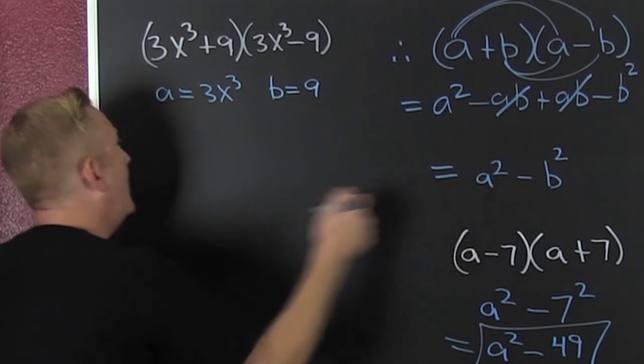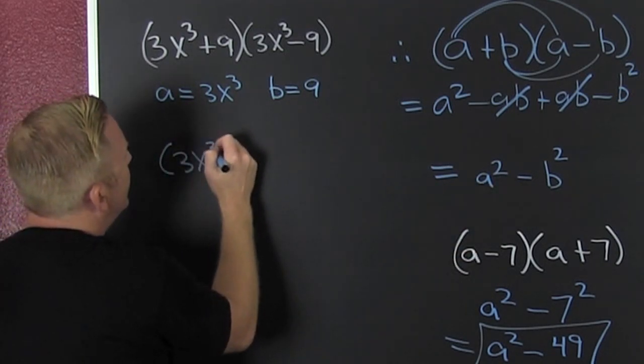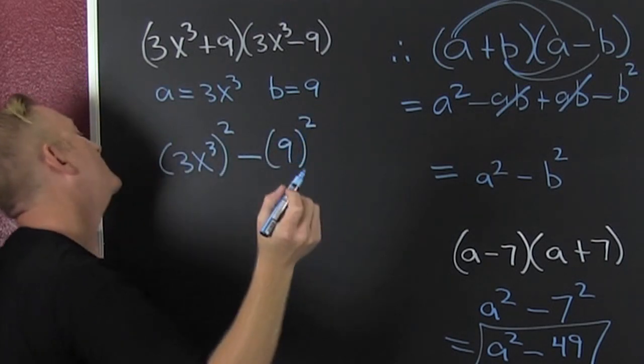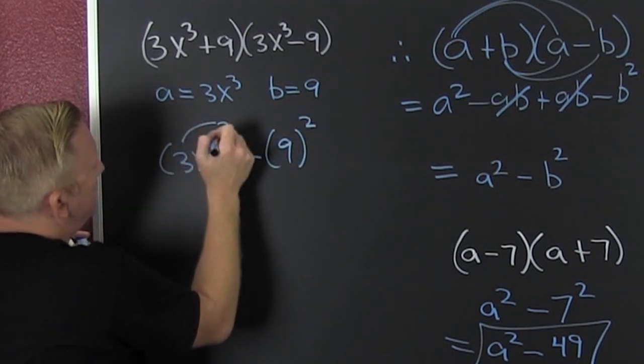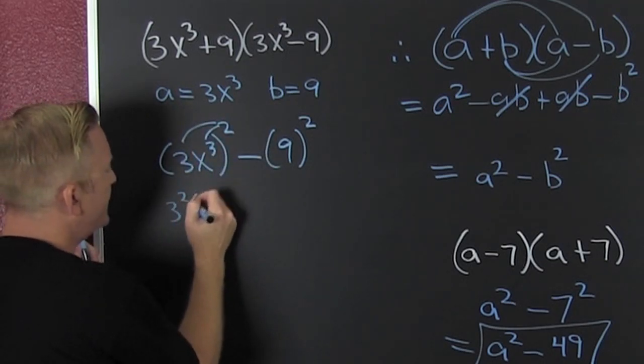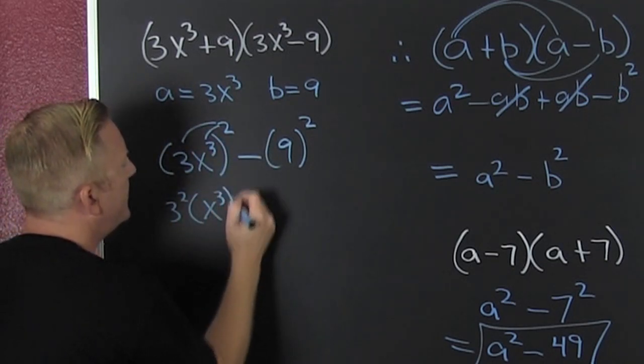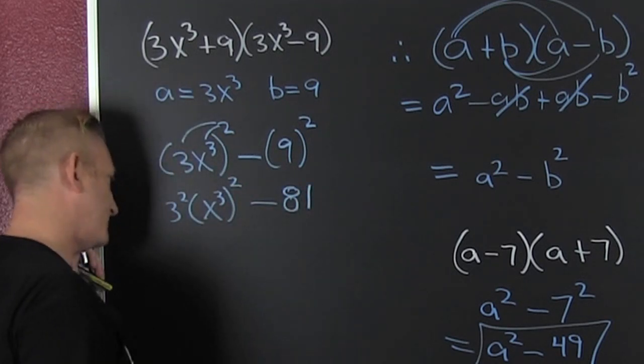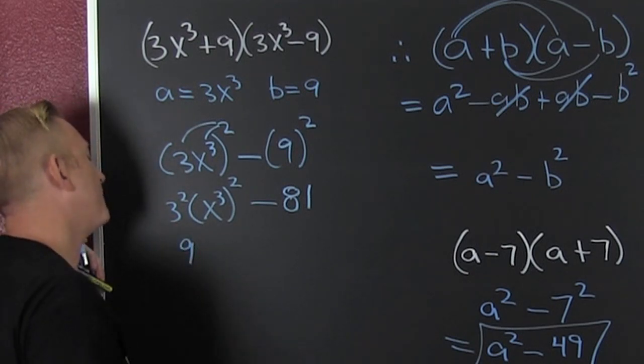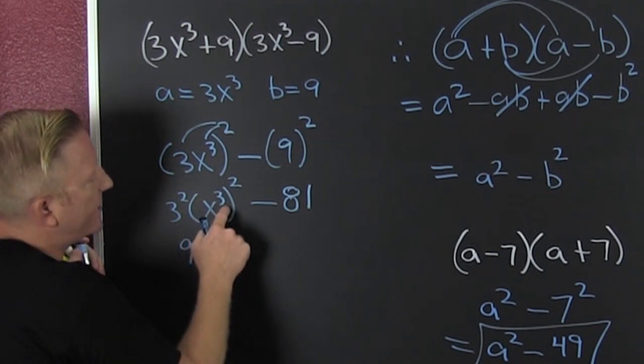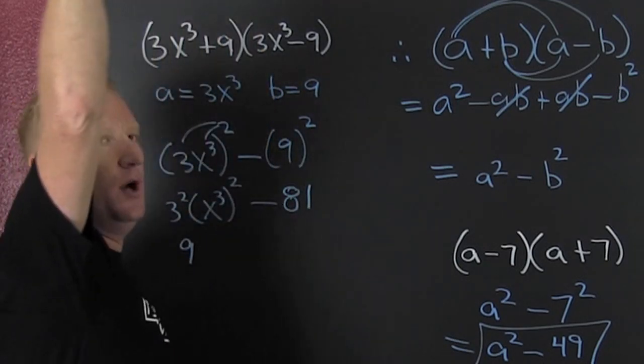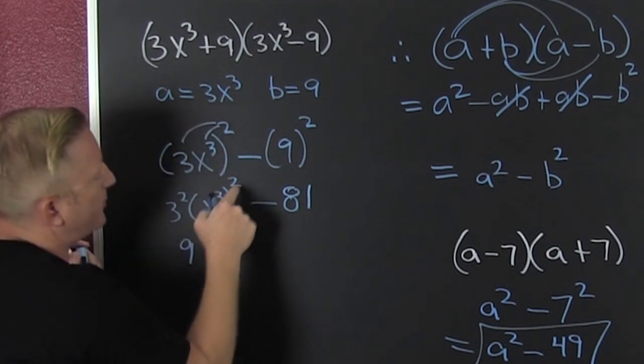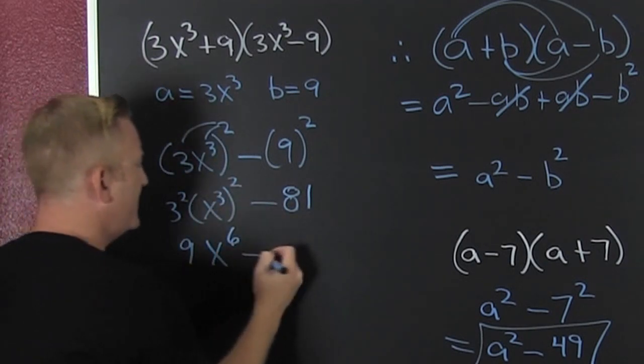So then that's three x to the third squared minus nine squared. Finish him. Make it rain. So that's three squared and x to the third squared, and then that's minus, let's just call it 81. Three squared is nine. Now x to the third squared, you got a power raised to a power, so you multiply and that's why we have x to the six, because three times two is six.